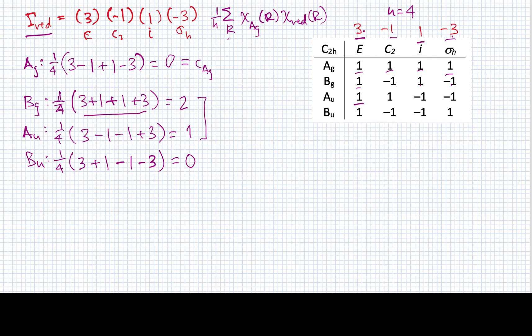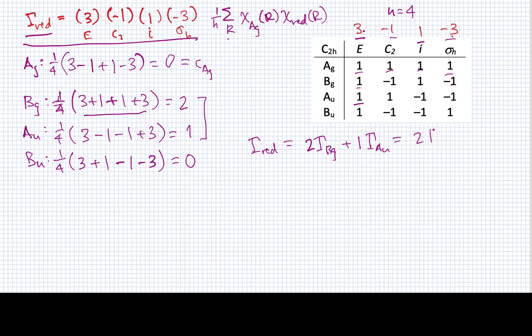So the only two irreducible representations that contribute to this reducible representation are Bg and Au. I can now write conclusively that my reducible representation equals 2Bg + Au. This would be the result of the decomposition of this reducible representation, and we'll be going through this in a couple of other cases in the next video.